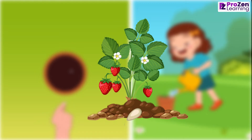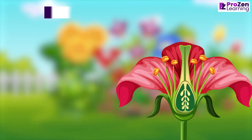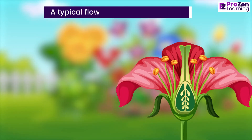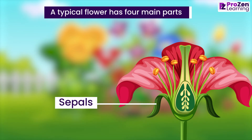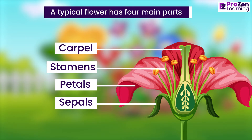Let us understand more about flowers and their parts. We see a variety of flowers around us. A typical flower has four main parts: sepals, petals, stamens, and the carpel. Look at this flower.